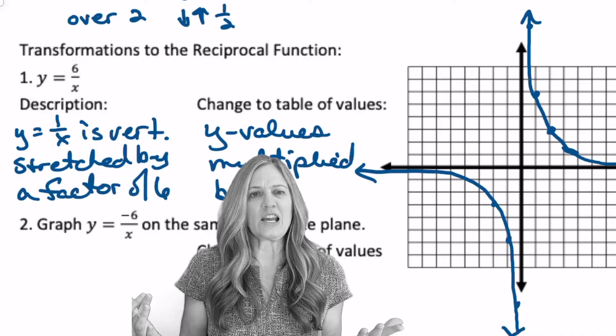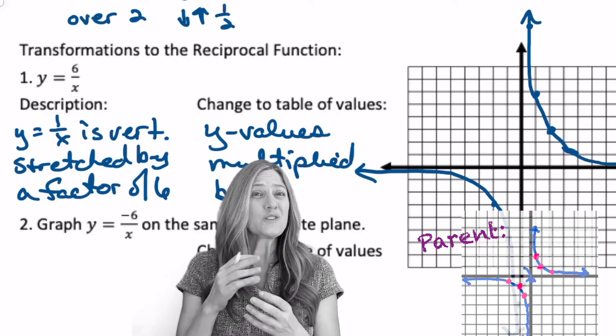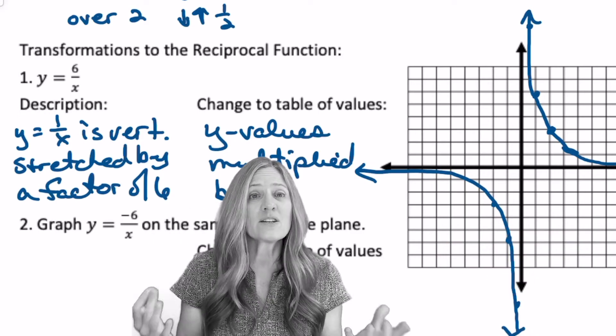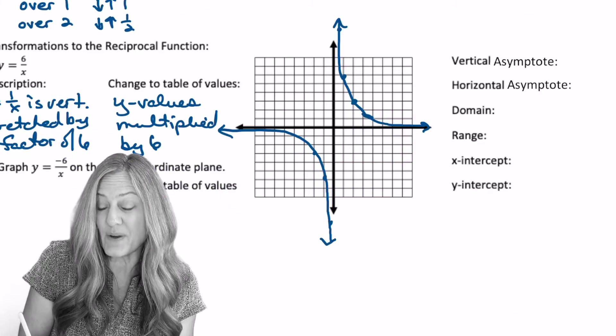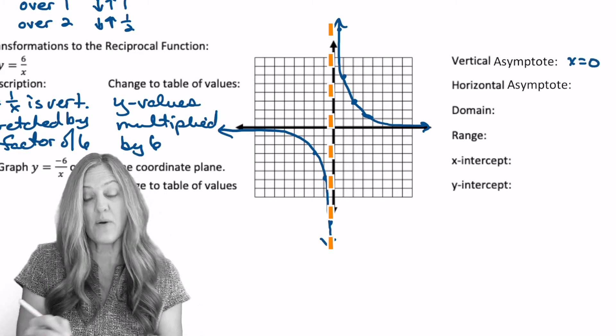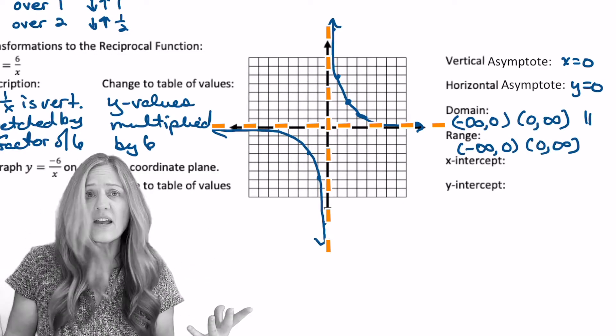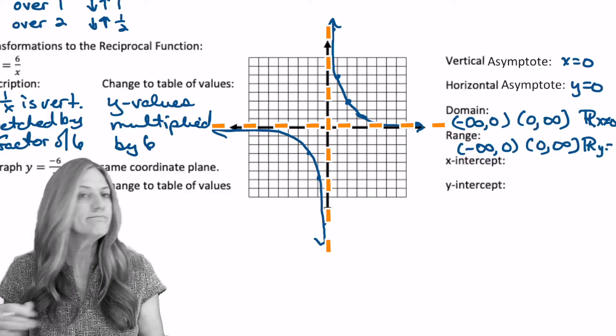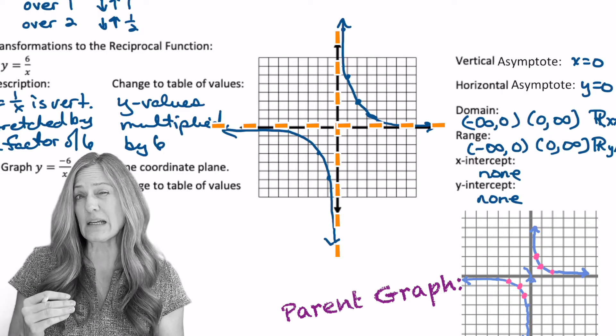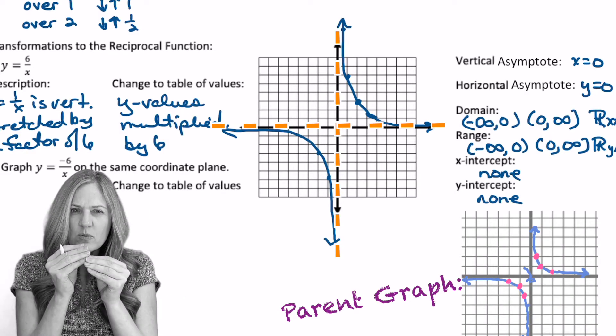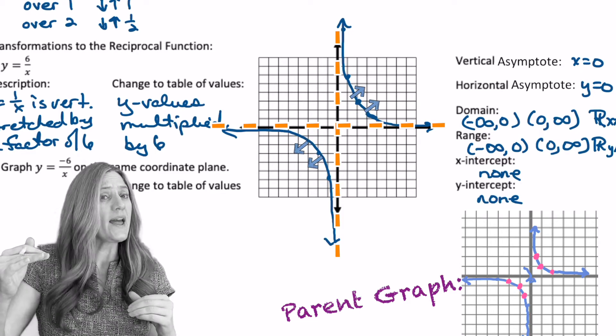How do we know the asymptotes didn't change? Well, on our parent function, the asymptotes were the x and y axis. And then all I did was vertically stretch. So I'm still not going to cross the x or y axis. Those will stay the same. So our vertical asymptote is the y axis. So that's x equals 0. Horizontal is the x axis, y equals 0. Our domain and range, those haven't changed. And do we have an x or y intercept? Nope, still don't. Let's notice one more thing. When I had a vertical stretch by a factor of 6, did the graph pull in towards the asymptotes? Or did it pull away from those asymptotes? I think it looks like it pulled away. When we've stretched, we pulled away from the asymptotes.